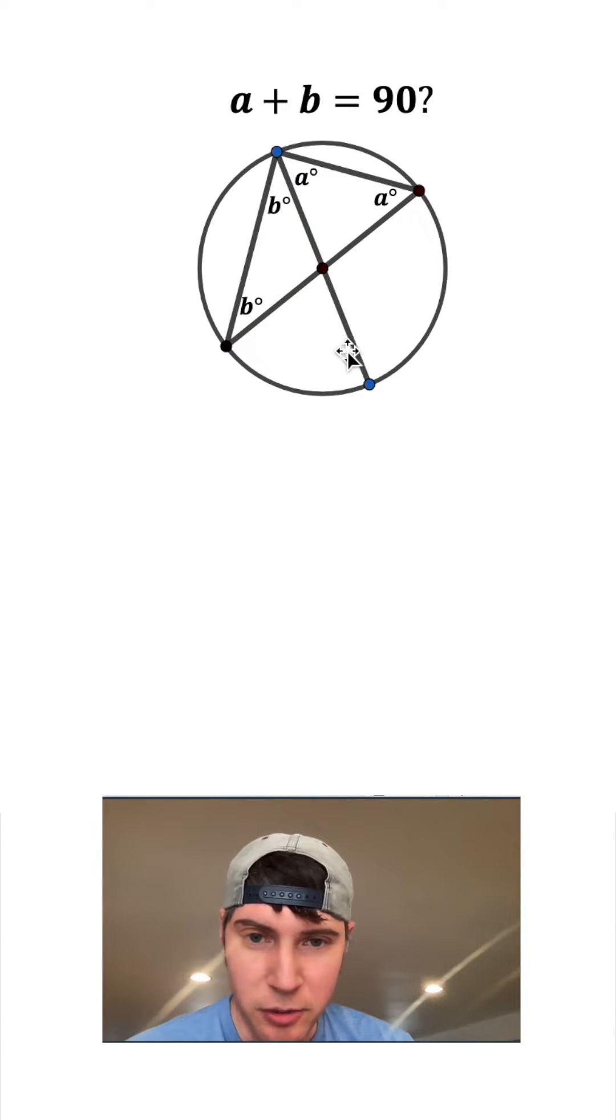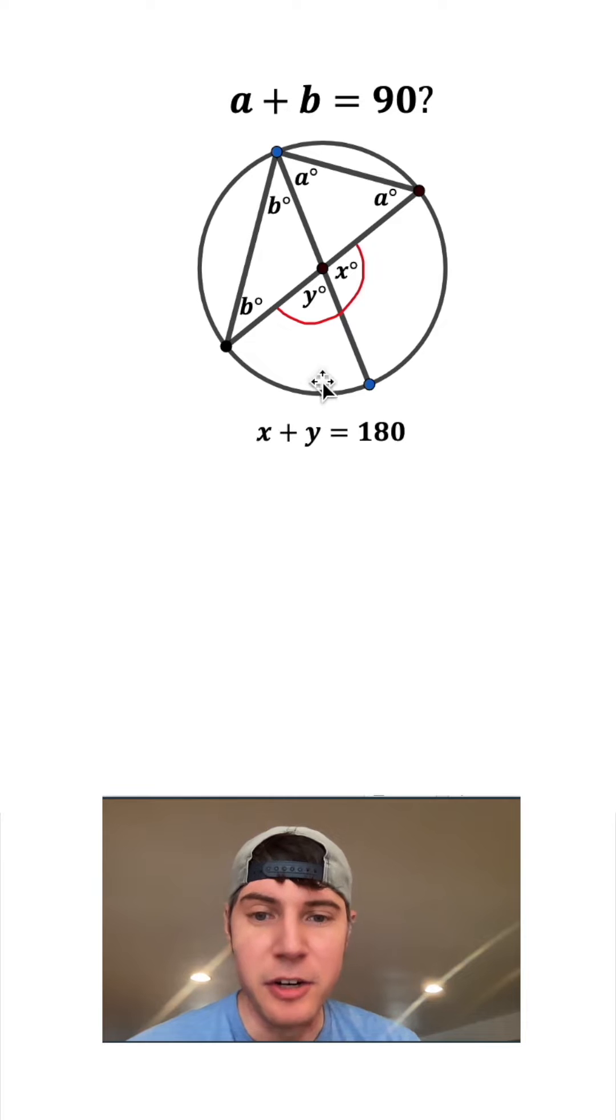Next, let's look at this angle right here. We'll call it X. And then we'll call this other one Y. These two angles make a linear pair, so they're going to add to 180 degrees. So we can say X plus Y equals 180.